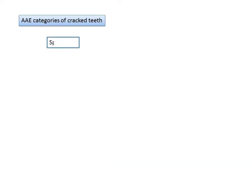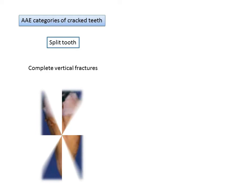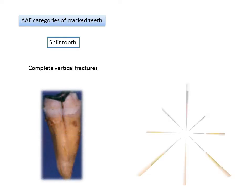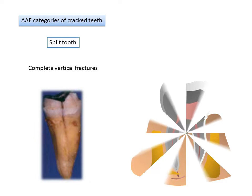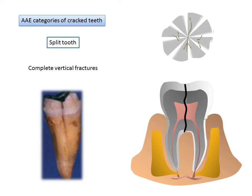The fourth category is split tooth, which is a complete vertical fracture. Unlike a cracked tooth where the fracture may not extend the full length, in a split tooth the fracture line runs through the entire length of the tooth. Viewed from the occlusal surface, the fracture runs from mesial to distal — a through-and-through fracture that splits the tooth into two halves.